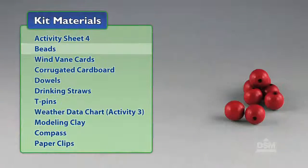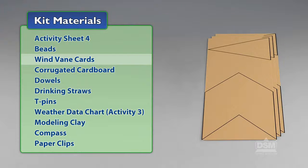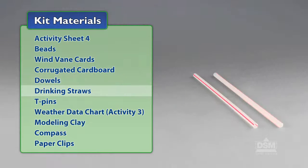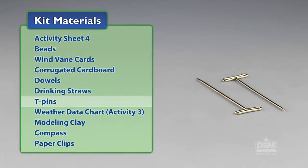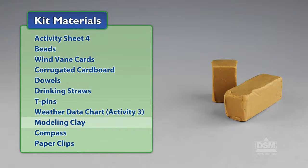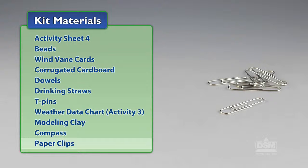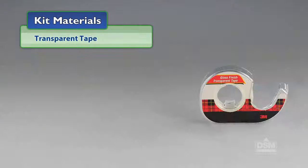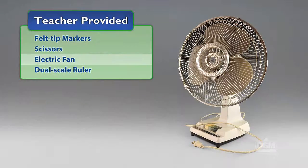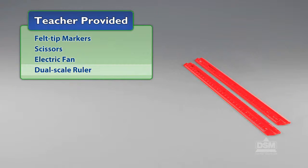You will need the following materials from the kit: Activity Sheet 4, beads, wind vane cards, corrugated cardboard, dowels, drinking straws, T-pins, weather data chart from Activity 3, modeling clay, compass, paper clips, and transparent tape. You will also need to provide felt-tip markers, scissors, an electric fan, and a dual scale ruler.